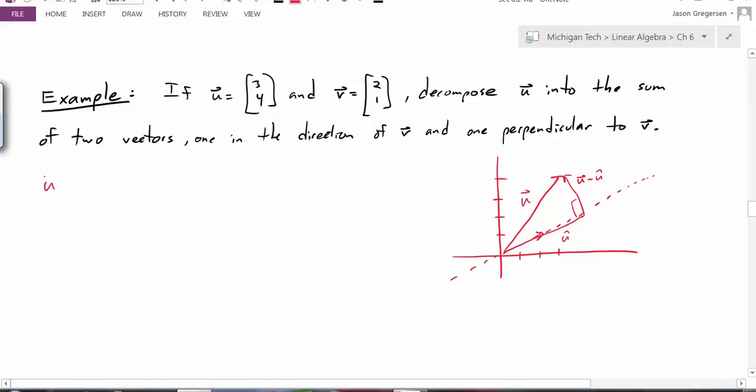Well, I'm trying to calculate u perp. I have my formula for that. It's u dot v divided by v dot v times the vector v. In this case, if we look at u dot v, that would be 3 times 2, which is 6, plus 4 times 1, which is 4, divided by v dot v, which is 2 times 2, which is 4, plus 1 times 1. And all that times my vector v. This looks like 10 divided by 5 times that vector.